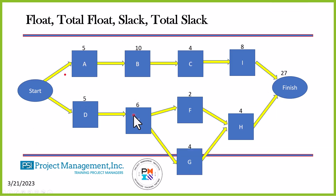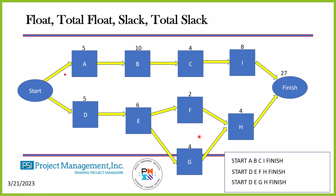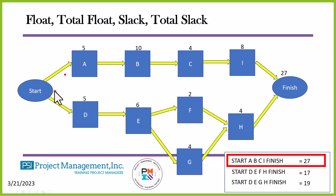What do we do with this information? We look at this network diagram with our duration estimates and discover what the total float — also called total slack — is. Float is how long an activity can be delayed before it becomes a critical path item. We start by doing the paths at the bottom, then calculate the actual duration of each path. We determined that Start-A-C-I-Finish is the critical path. We went through each path, identified them, and added up the durations for each path, giving us the duration estimates.